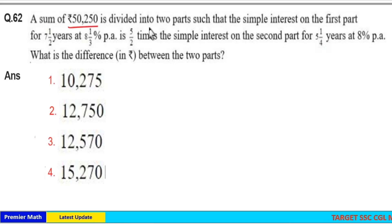A sum of rupees 50,250 is divided into two parts such that simple interest on the first part for 7½ years at 8⅓% per annum is 5/2 times the simple interest on the second part for 5¼ years at 8% per annum. What is the difference between the two parts?